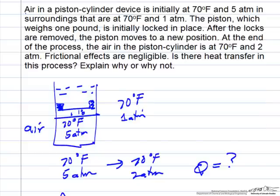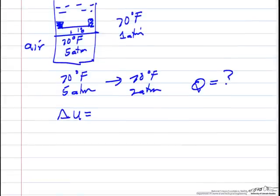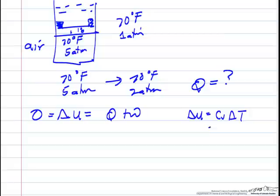So if we look at first law balance, for this system we're at the same temperature. For an ideal gas, that would say delta U is 0, since delta U equals Cv delta T for an ideal gas, so that means q equals minus w.